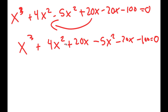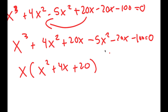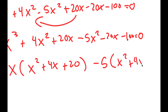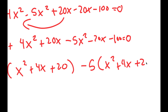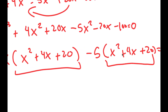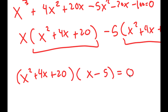From x to the power of 3 plus 4x squared plus 20x, I'm going to factor out x. So I get x times x squared plus 4x plus 20. And from negative 5x squared minus 20x minus 100, I'm going to factor out negative 5. So I get negative 5 times x squared plus 4x plus 20. Because both of these terms have x squared plus 4x plus 20 in them, I'm going to factor that out. So I get x squared plus 4x plus 20 times x minus 5 is equal to 0.